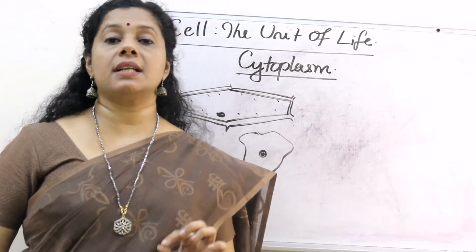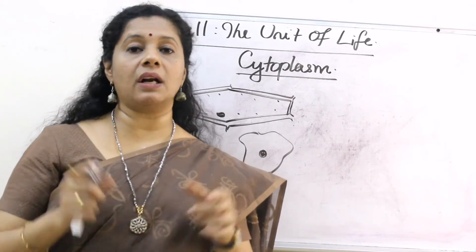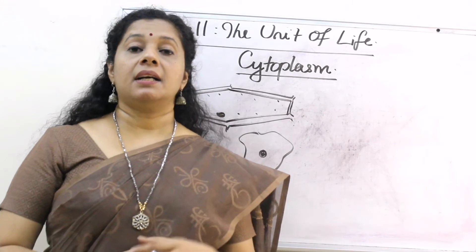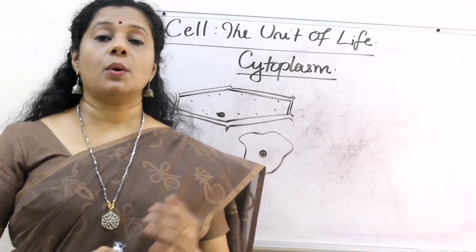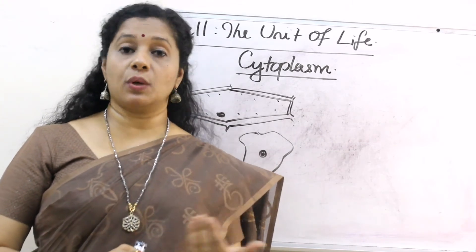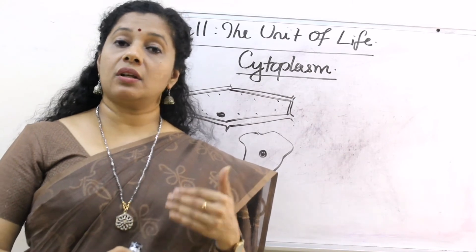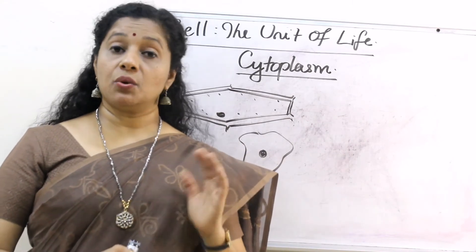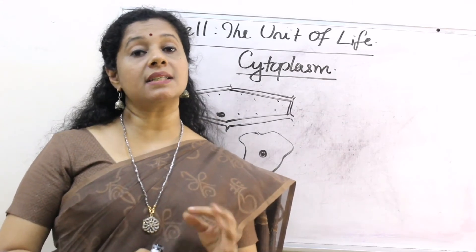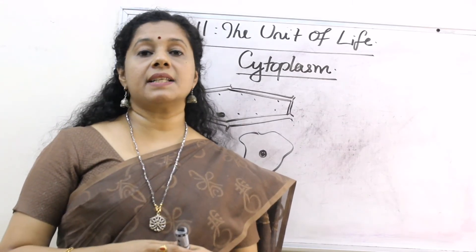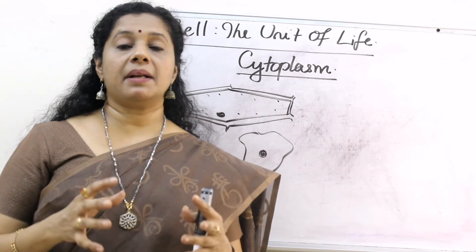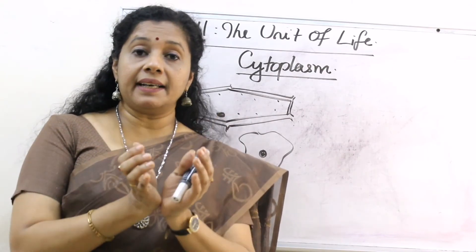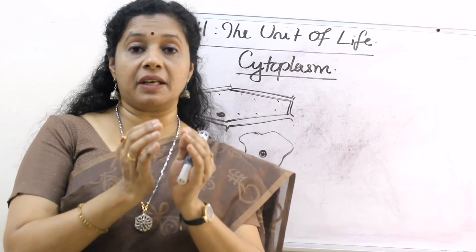Cell organelles are usually membrane-bound, meaning they each have their own membranes similar to the plasma membrane. In prokaryotes, since there is no nuclear membrane, other membrane-bound structures are also absent. Eukaryotic cells, however, have membrane-bound cell organelles. The membrane is significant because it limits and defines the functional property of that particular region.